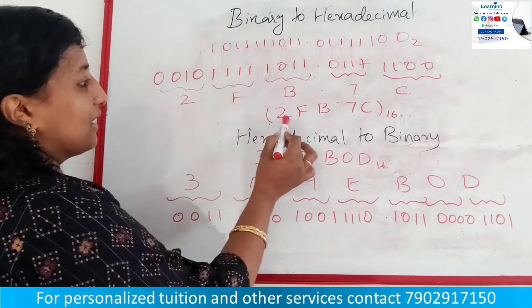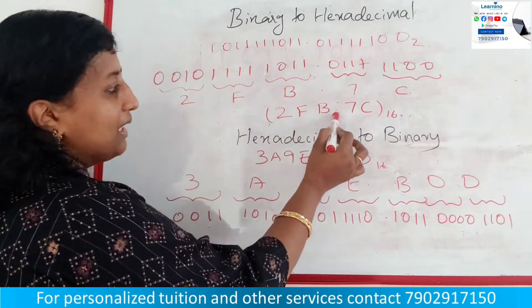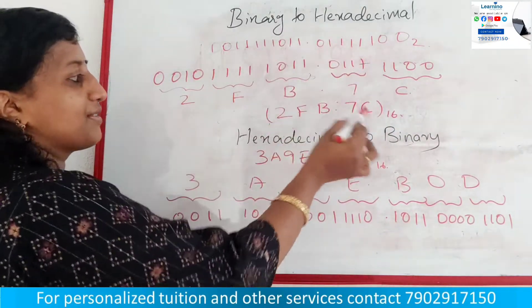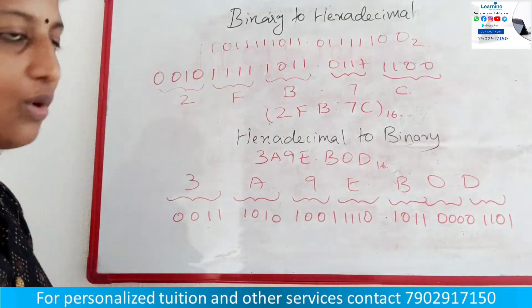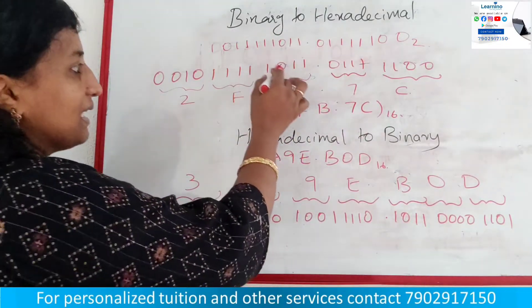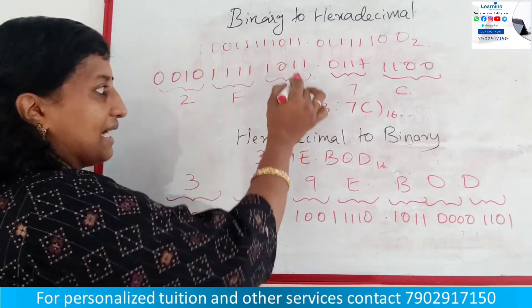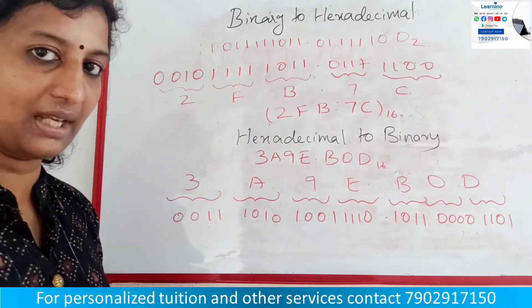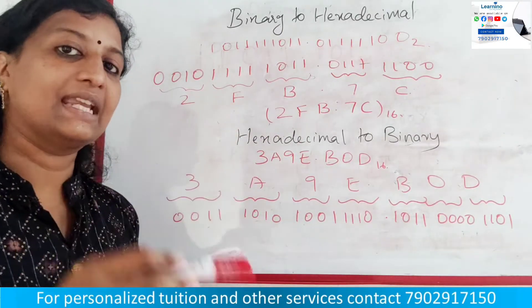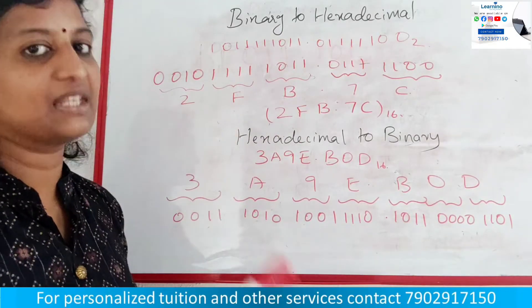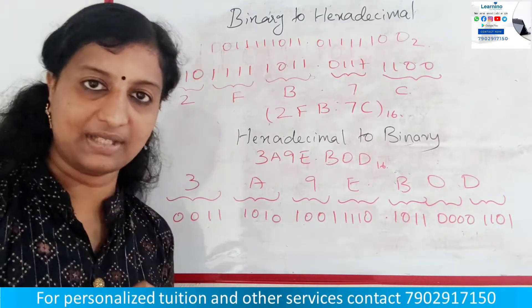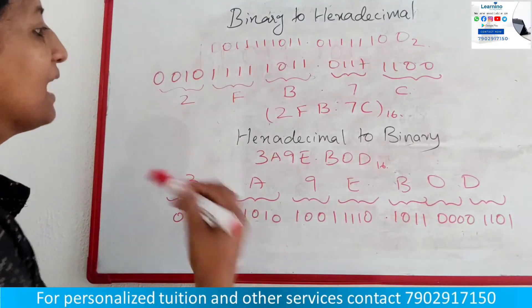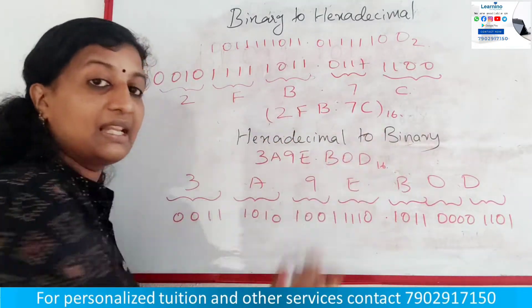Now we have the result: 2FB.17C. This is the corresponding hexadecimal value. The hex digit table includes a, b, c, d, e, f. This is the hexadecimal value we have arrived at.